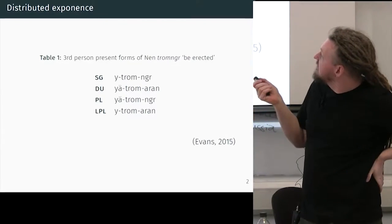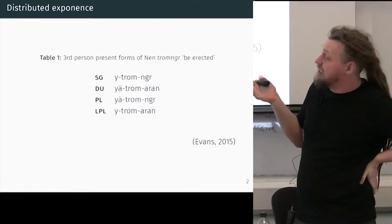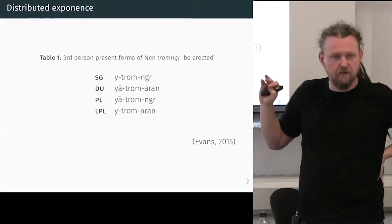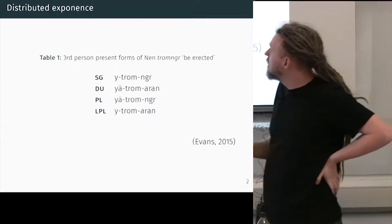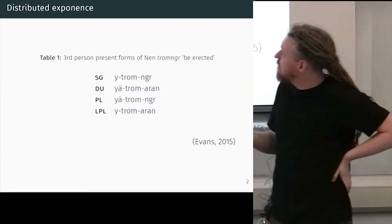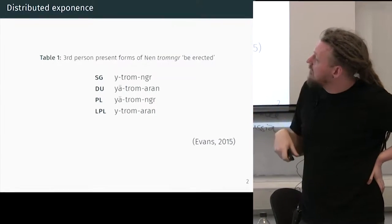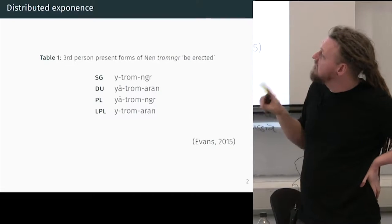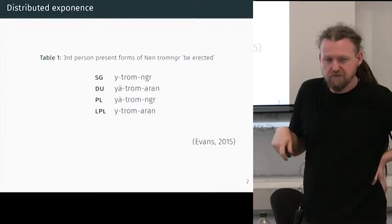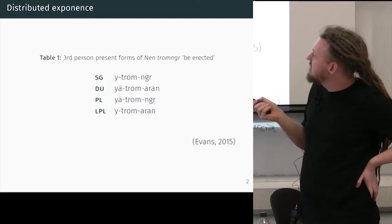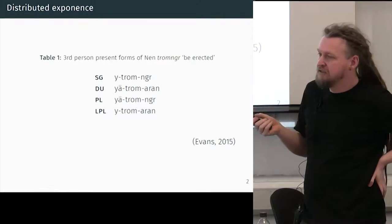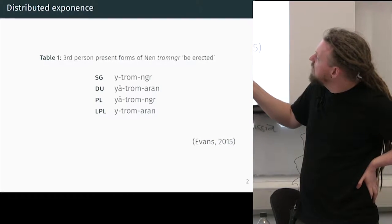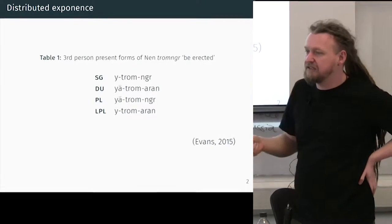This is data taken from NEN, a Yam family language closely related to Ngorumbu that Rados talked about before. In these verbs are marked for number across a four-way system between singular, dual, plural, and large plural. It's marked with both a prefix and suffix.